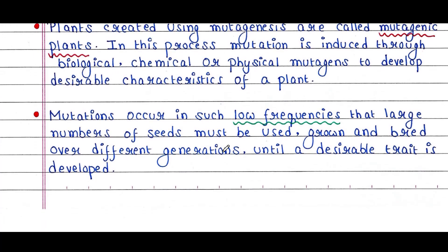Mutations occur in such low frequencies that large numbers of seeds must be used, grown, and bred over different generations until a desirable trait is developed. Since induction of mutation is an artificial process, its occurrence is very uncertain and only a few plants could be mutated this way. Hence, we have to work with a large number of seeds.